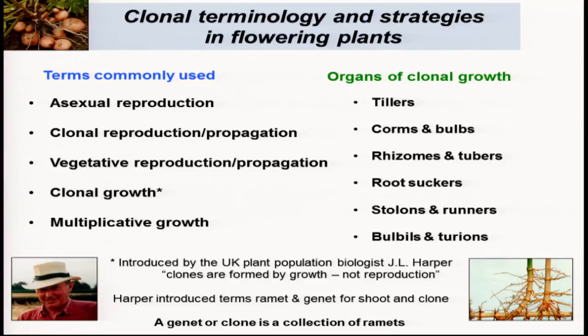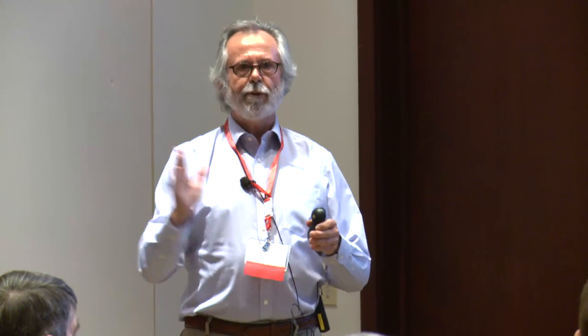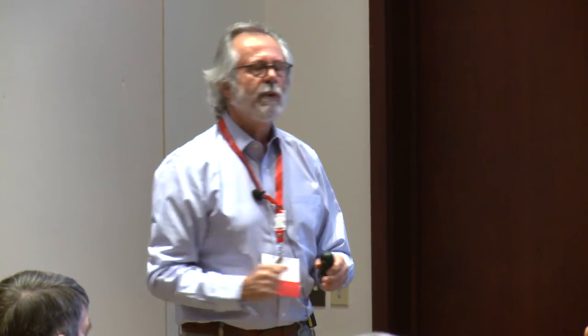Harper was enormously influential in plant population biology. He developed a terminology now widely used by plant biologists: the ramet and the genet. The idea is that a genet equals a clone, and a genet is made up of a collection of ramets. Ramets are simply shoots. Harking back to the idea that plants are made up of modular units, a ramet equals a shoot.